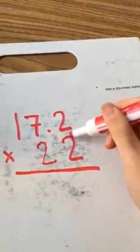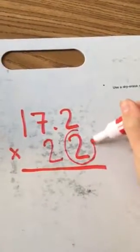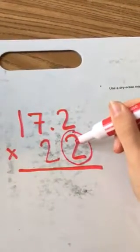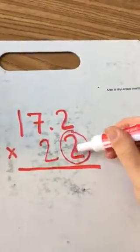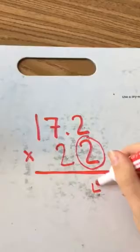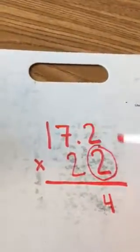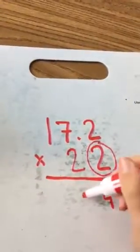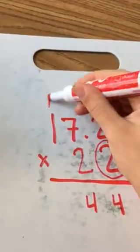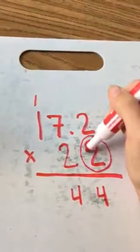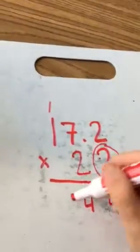So remember with standard algorithm, we are focusing on this number. We're going to multiply the digit in this place to the 2, to the 7, and to the 1. So 2 times 2 is 4. 2 times 7 is 14. So what I'll do is I'll put the 4 down here, and the 1 is going to go up here. And then 2 times 1 is 2, plus 1 is 3.